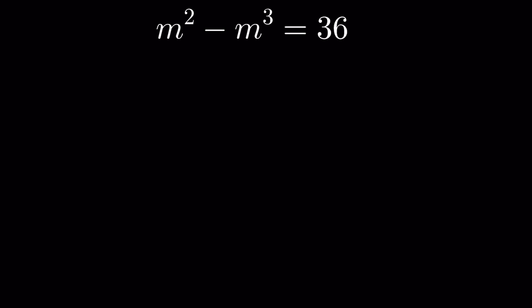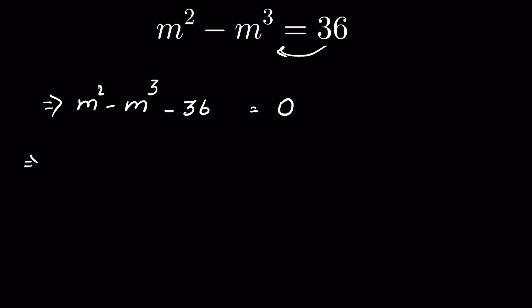We have m squared minus m cubed equals 36 and we have to find the value of m. Sending 36 to the left-hand side gives m squared minus m cubed minus 36 equals 0. We can also rewrite minus 36 as minus 27 minus 9.